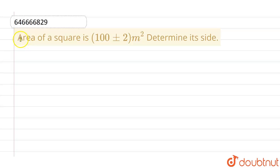Hello everyone, if we talk about this question, this given question is, area of a square is 100 plus minus 2 meter square. We have to determine its side.